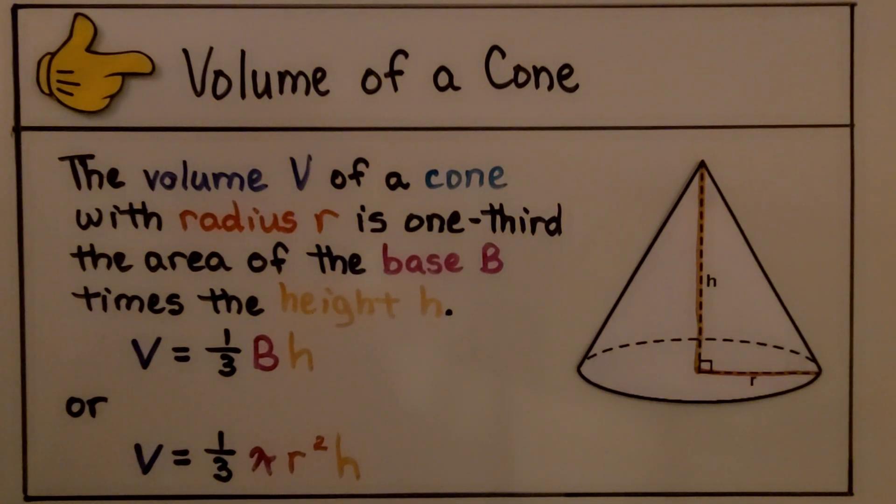So for your notes, the volume V of a cone with radius r is one-third the area of the base B times the height h. Volume is equal to one-third base times height. Or, if we don't know the area of the base, we can use volume is equal to one-third pi r squared h using this to find the base area.